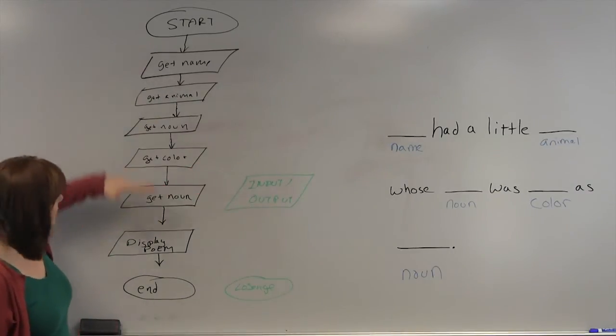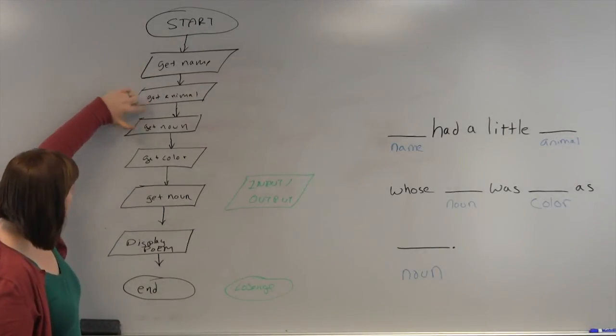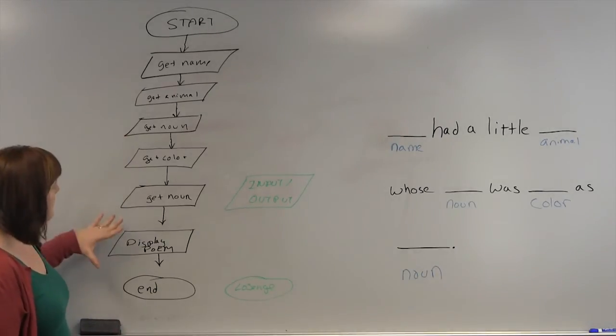So this is the exact same thing I just did pseudocode for. We have getName, getAnimal, getNoun, getColor, getNoun, displayPoem. And this represents our flowchart.